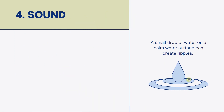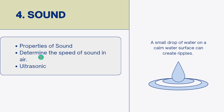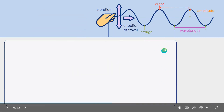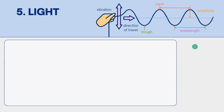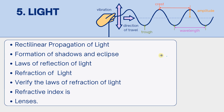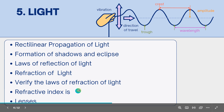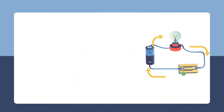Sound is another key topic that does not miss in exams. Under Sound, look at the properties of sound, how to determine the speed of sound in air, and ultrasonic sound. Light is also a key topic — covering the rectilinear propagation of light, formation of shadows and eclipses, laws of reflection of light, refraction of light, verifying the laws of refraction, refractive index, and lenses.